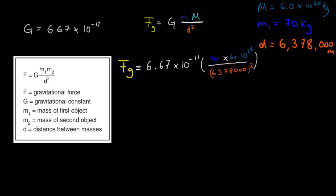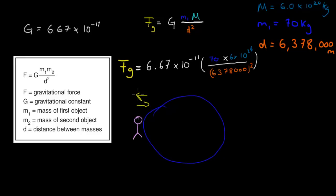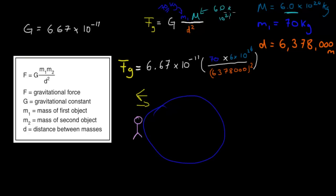Before I go into the dot point, I want to give you another example. So now we have you — one person being you — and we're comparing that to the Earth. How much attraction is there between you and the Earth? This is the same formula as before: the gravitational force equals the gravitational constant times mass 1 and mass 2, divided by distance squared. Mass 1 will be you, or some person — I'm going to take a random weight of 70 kilograms. Mass 2 will obviously be the Earth's mass: 6.0 times 10 to the power of 24. The distance between you will not be zero even if you are on the surface.